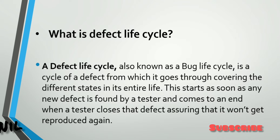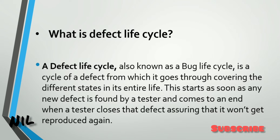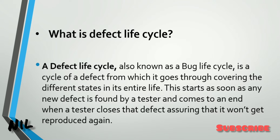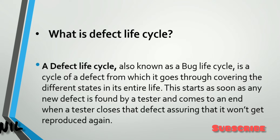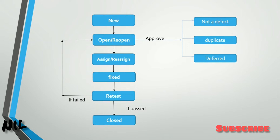This is a cycle of the defect life cycle. It starts as soon as any new defect is found by the tester, and it comes to an end when the tester closes that defect, assuring that it will not get reproduced again. There is a diagram here that I have made by hand.